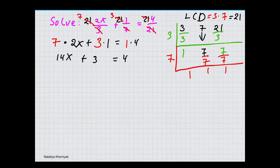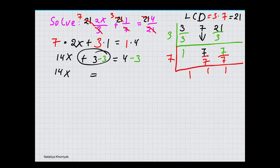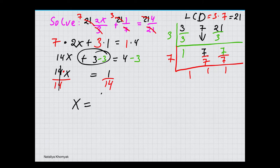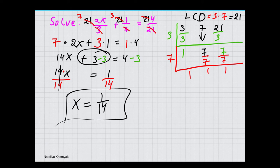Now that each side is simplified, we can solve. First thing we're going to do is undo addition by taking away 3 from both sides. So we have 14x equals 4 minus 3, which is 1. x is being multiplied by 14, so the opposite is to divide by 14. Whatever you do to one side, you do the same to both sides. So this cancels, and x equals 1/14. And this is our solution.